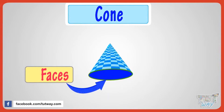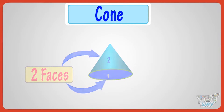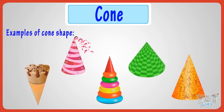Now let's see its faces. One of the faces is round shaped on its bottom. The other face is the curved surface of the cone that wraps around it. Try to find objects of this shape in your house. Here are a few examples of cone shaped objects.